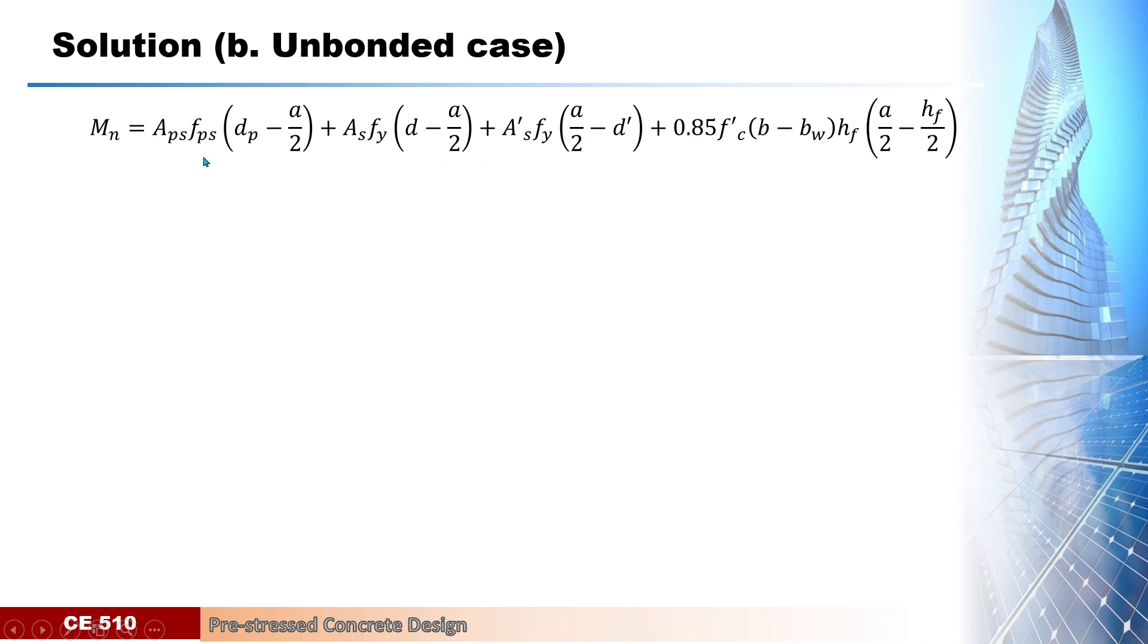What's new here will be the value of FPS and the value of a as compared to the first part for bonded tendons. Substituting values, we got now a nominal moment of 2034 kilonewton-meters.